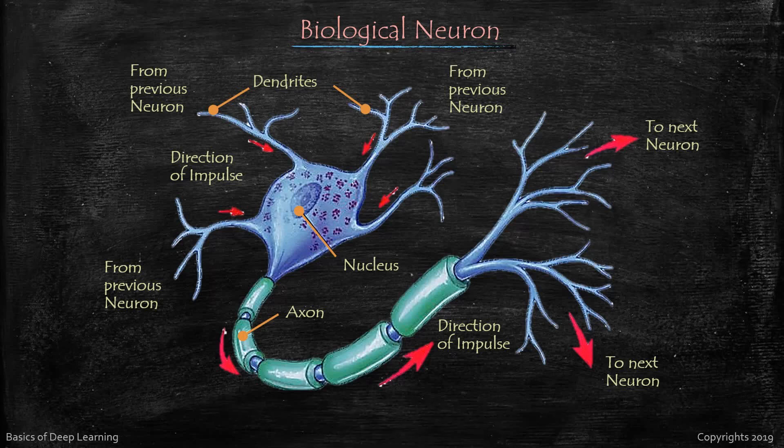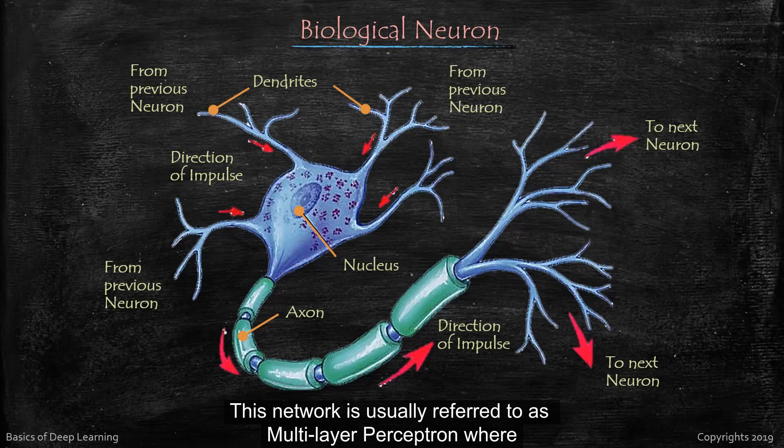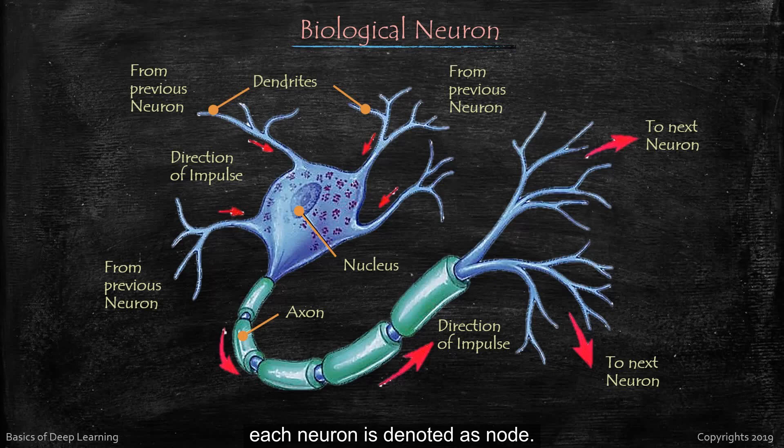Hence in case of artificial perceptron we need to create a network of neurons to get the desired output. This network is usually referred to as a multilayer perceptron where each neuron is denoted as node. So let's have a look at a multilayer perceptron.